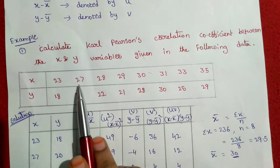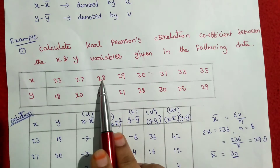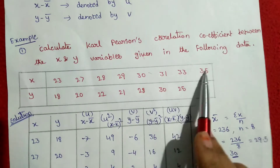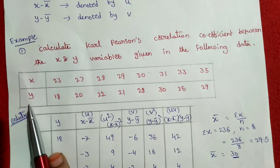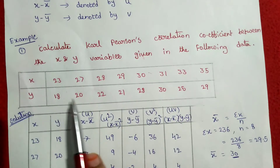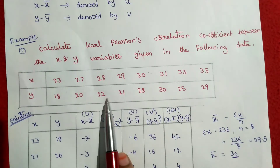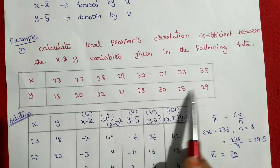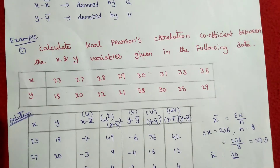The x variables are: 23, 27, 28, 29, 30, 31, 33, 35. The y variables are: 18, 20, 22, 21, 28, 30, 25, 29.